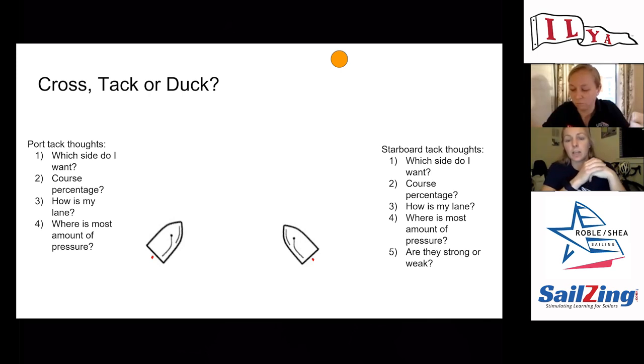But if I'm the starboard tack boat, I'm thinking about the course percentage and where the lane is, so I might make the port tack boat tack so that I can take their lane. Or I might think that they're going to duck because they're really close to lay line and they don't want to do any more tacks, so I might have to actually tack before them. Just really think when you come into each of these situations: which side of the course do I want, what is the course percentage, how is my lane, and where is the most amount of pressure?